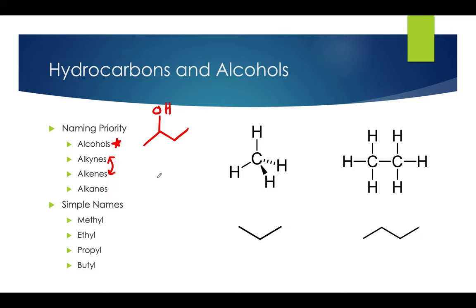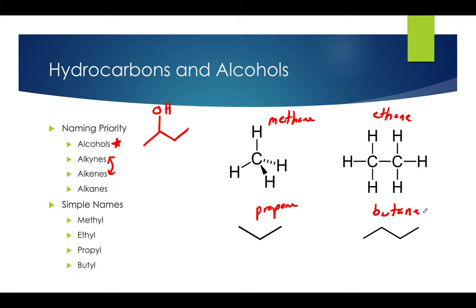The last thing we should cover would be the naming conventions of the simple ones. As I said before, methyl, ethyl, propyl, and butyl cover the first four. So one carbon would be methane, two carbons ethane, three propane, and four butane. If these were alcohols, alkynes, or alkenes, they would still follow the same methyl, ethyl, propyl procedures, but instead of '-ane' it would be '-ene,' '-yne,' or '-ol,' depending on which one it is.